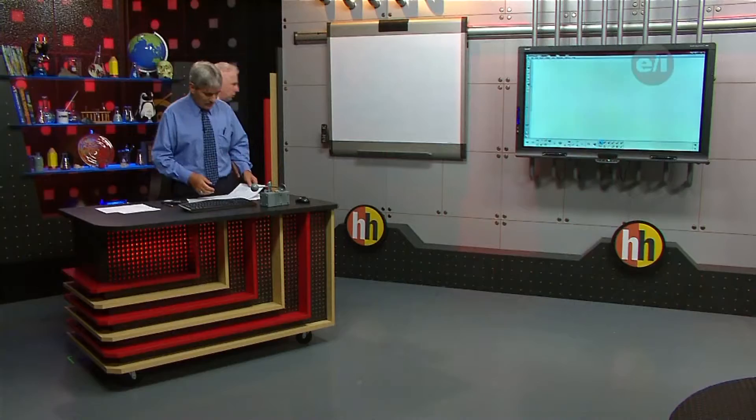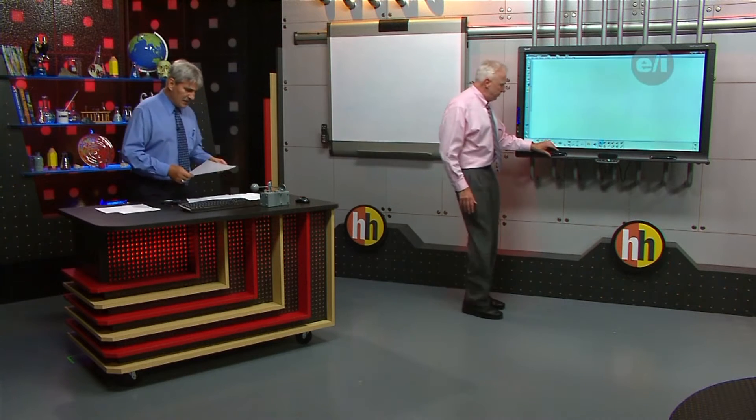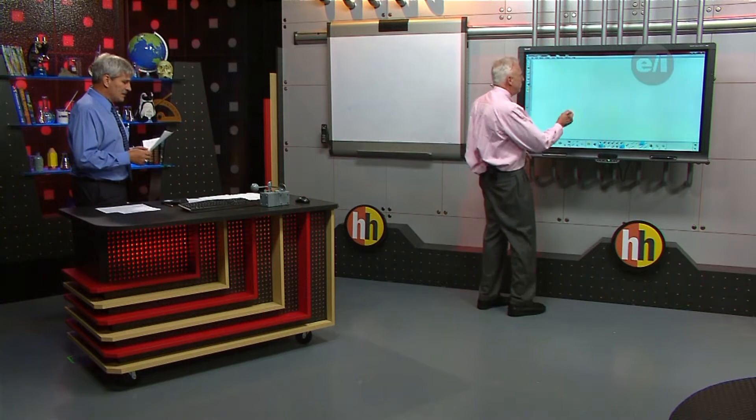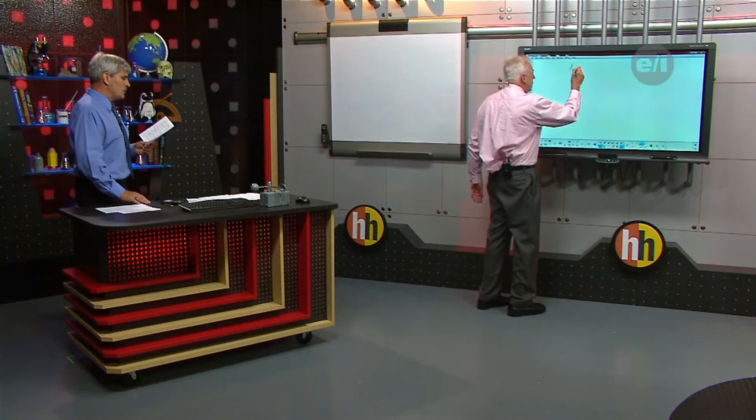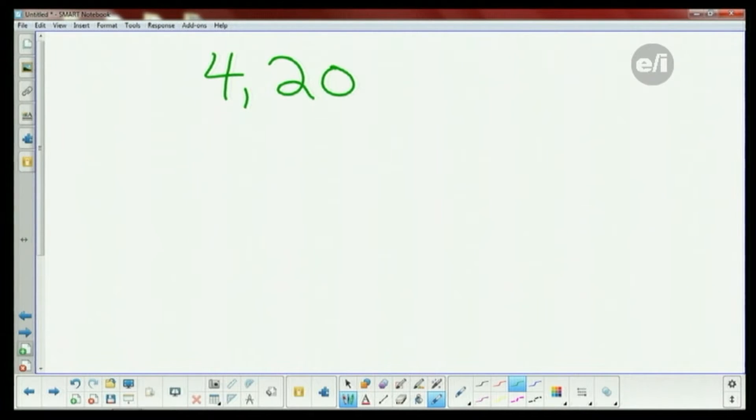We have another question, an email question from North Carolina. It's a scientific notation question. It says an eye blinks 4,200,000 times in a year. Write this number in scientific notation.